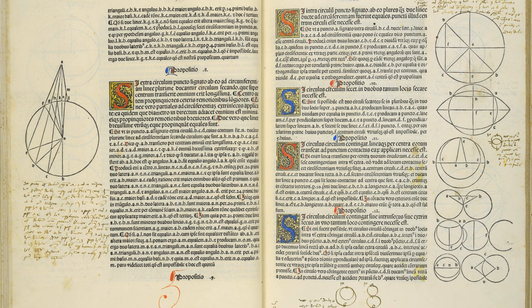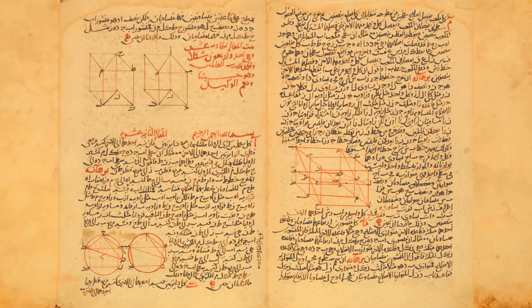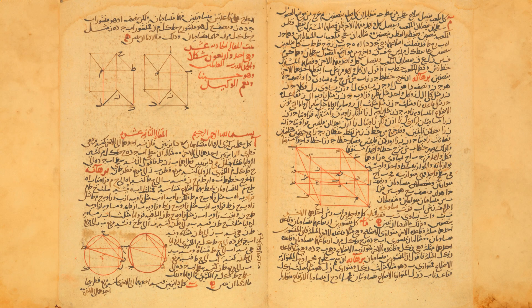The Elements is a collection of 13 books. They cover plain geometry, elementary number theory, including Euclid's algorithm, and solid geometry. It's the most published textbook ever.